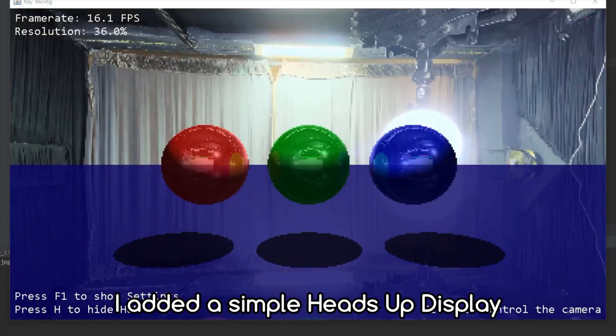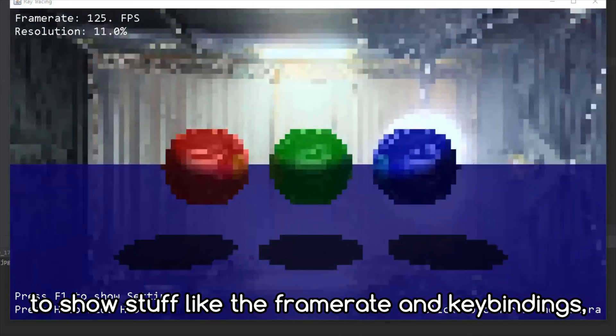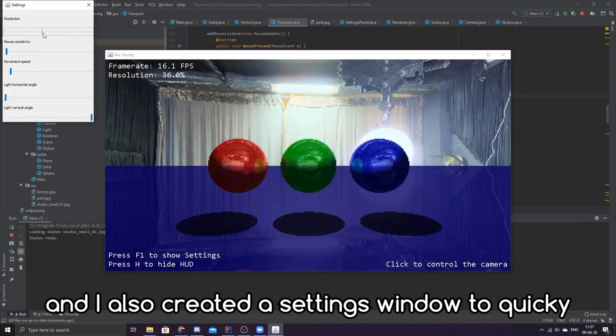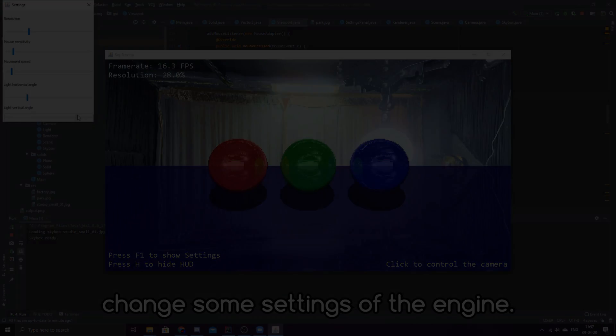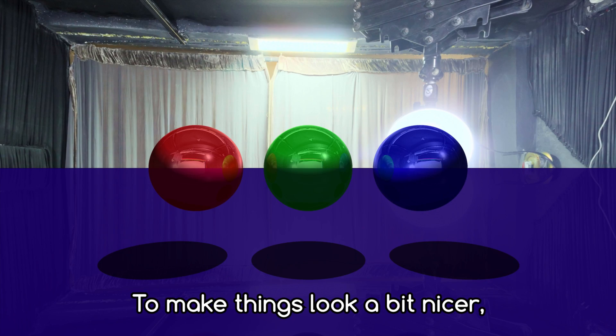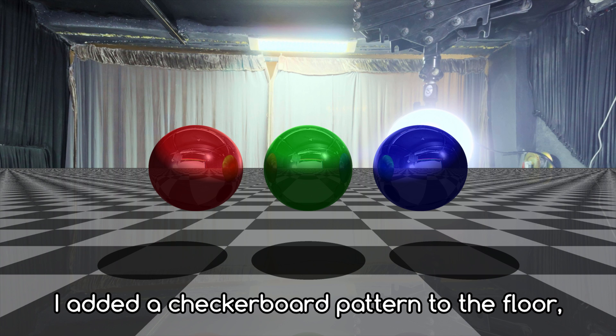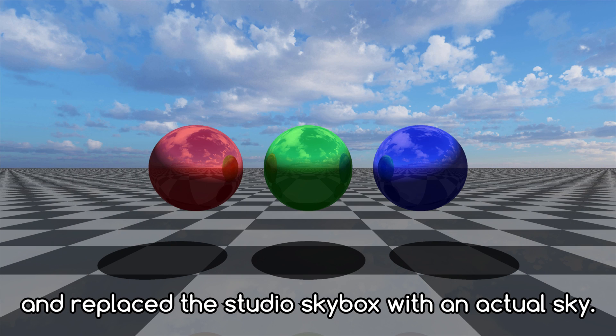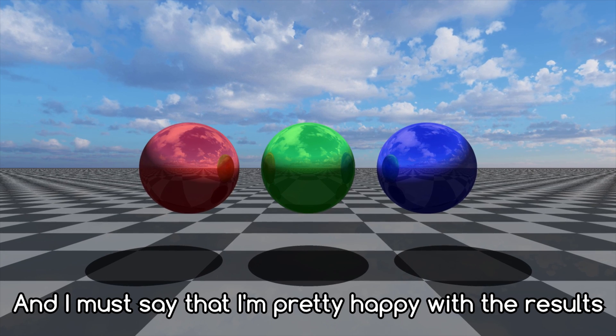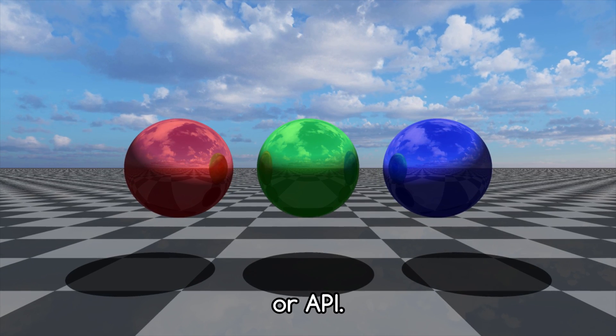I added a simple heads-up display to show stuff like the frame rate and key bindings, and I also created a settings window to quickly change some settings of the engine. To make things look a bit nicer, I added the checkerboard pattern to the floor and replaced the studio skybox with a natural sky. And I must say that I'm pretty happy with the results, considering that I haven't used any external library or API.